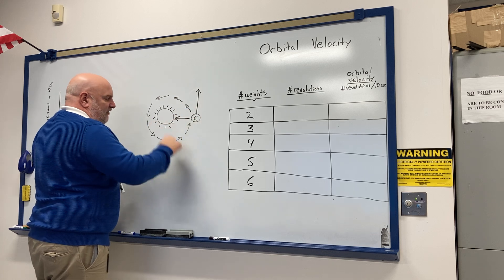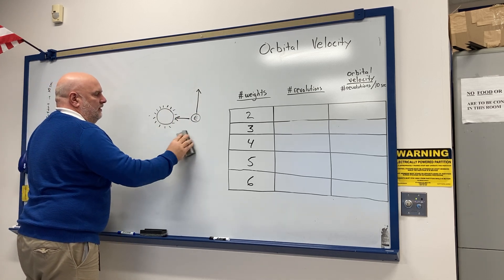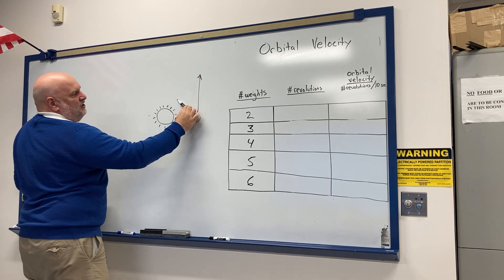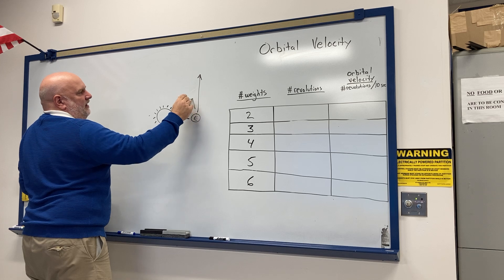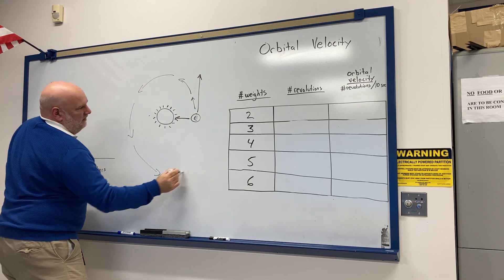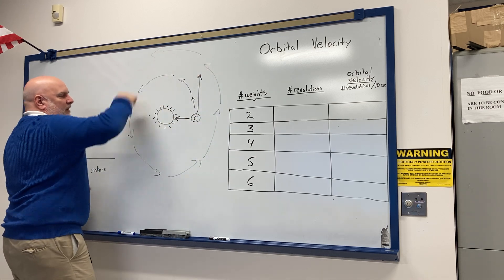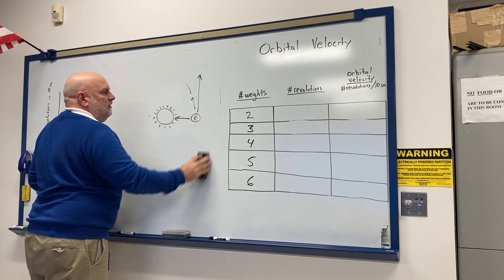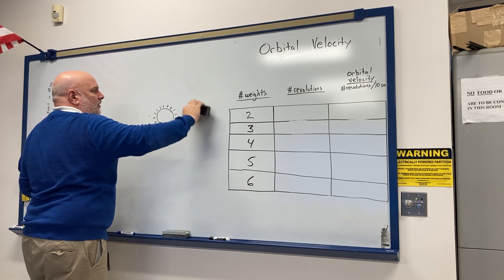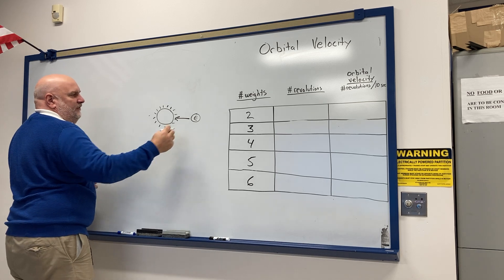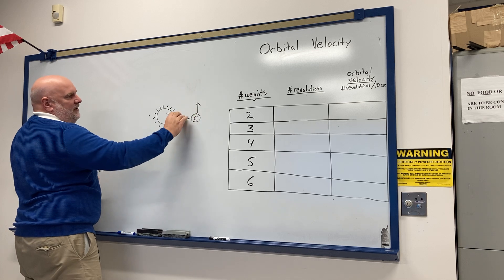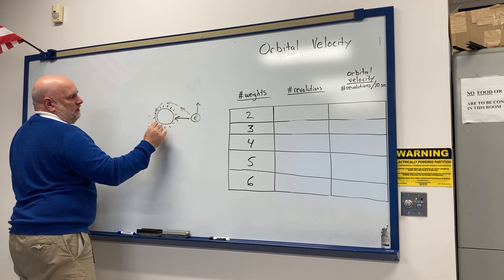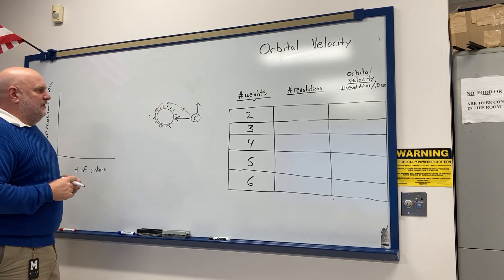For it to stay in orbit, things have to be nicely balanced. If the Earth was traveling faster, the combination of forces would lean outward and the Earth would spiral outwards. Or if the Earth was traveling at a slower speed, the combination of forces would make it go more inward, causing it to spiral into the Sun and crash.